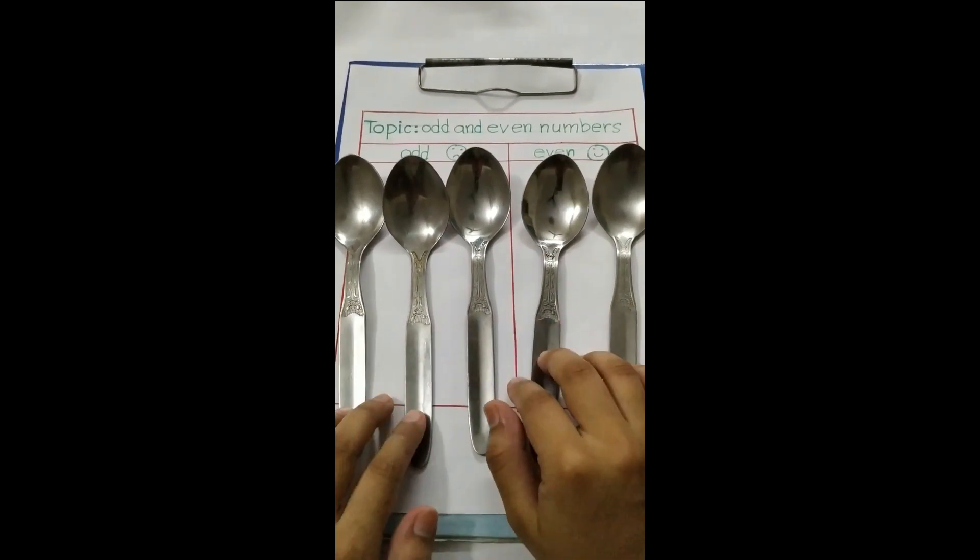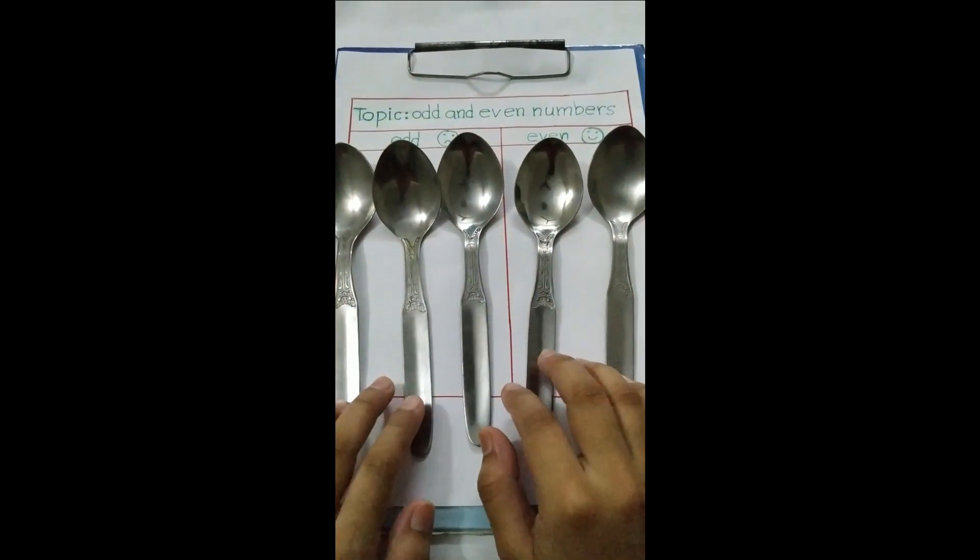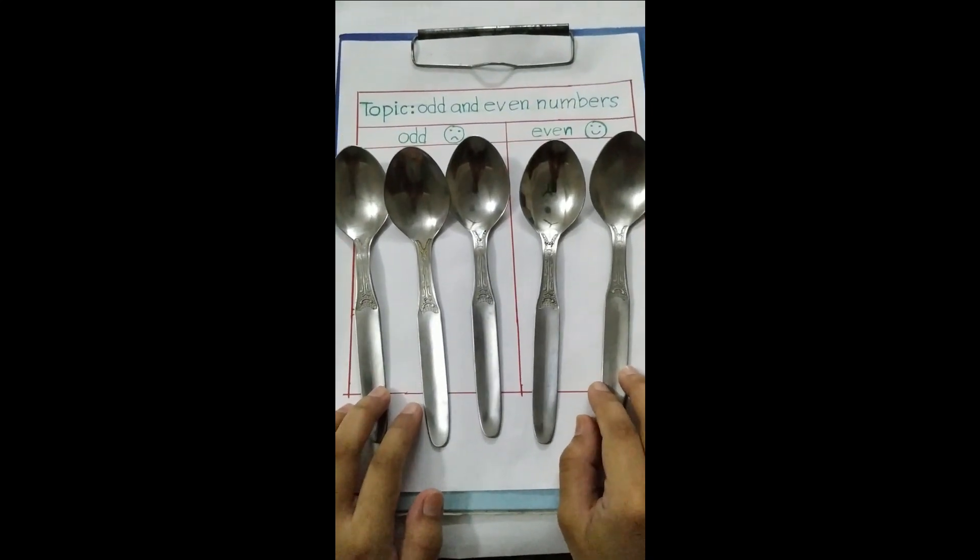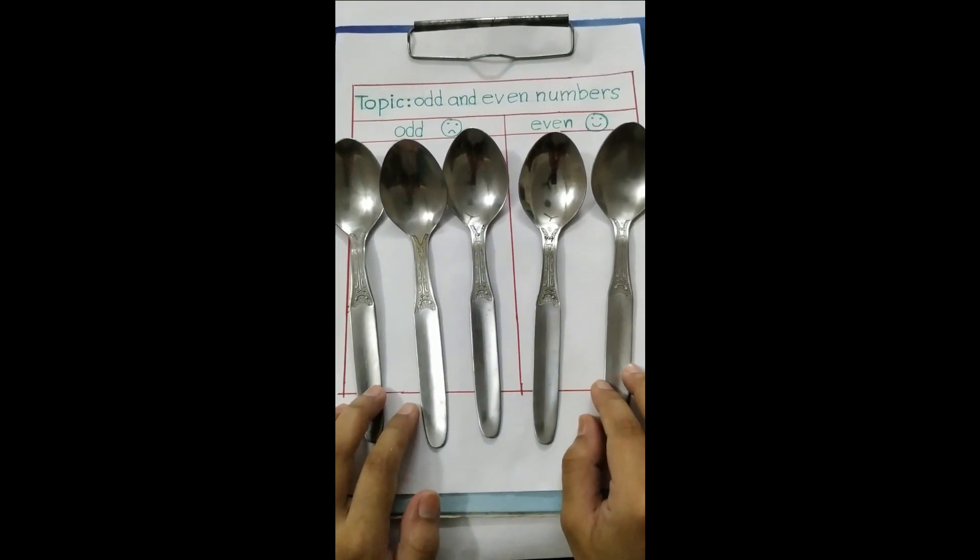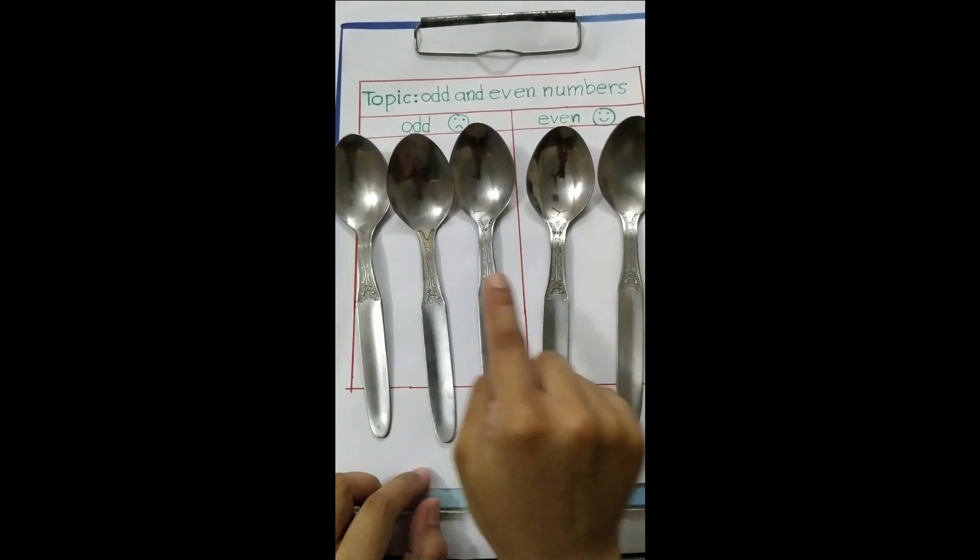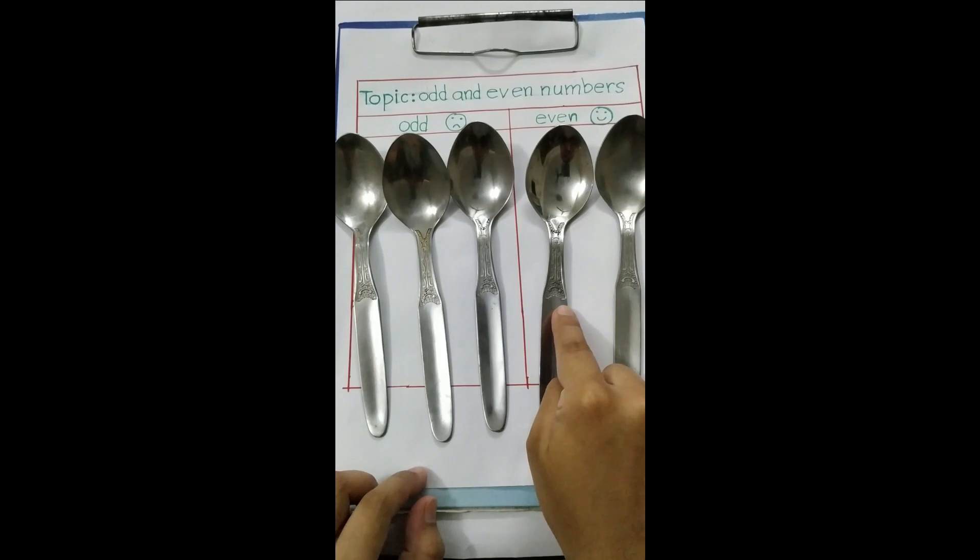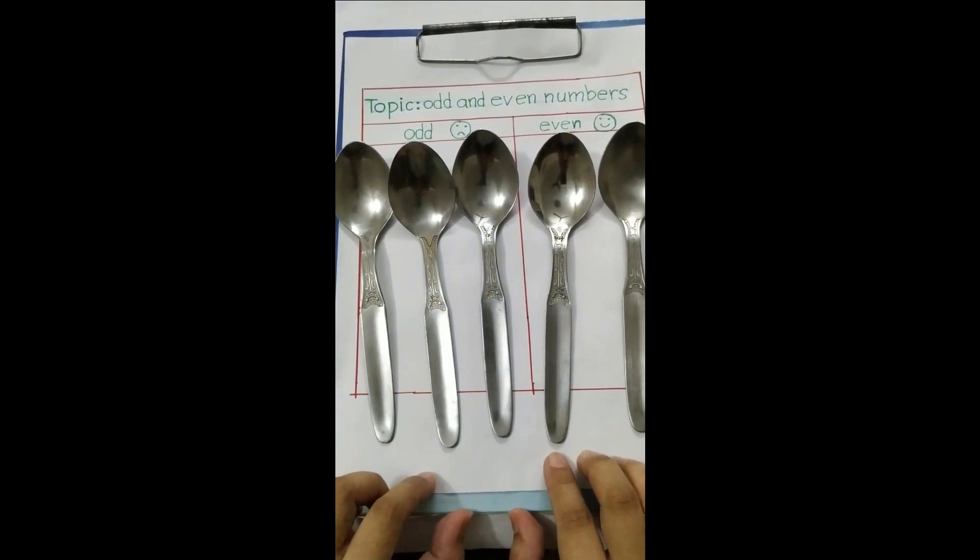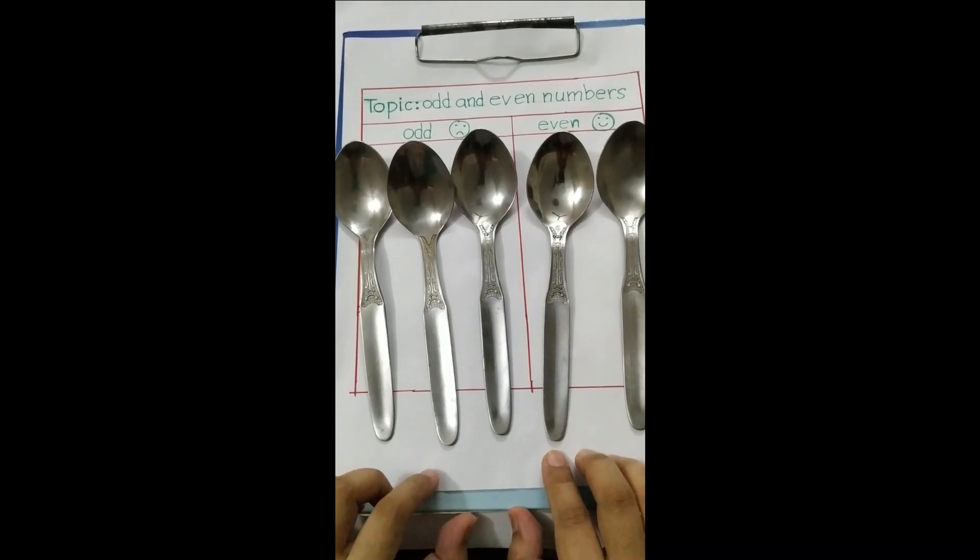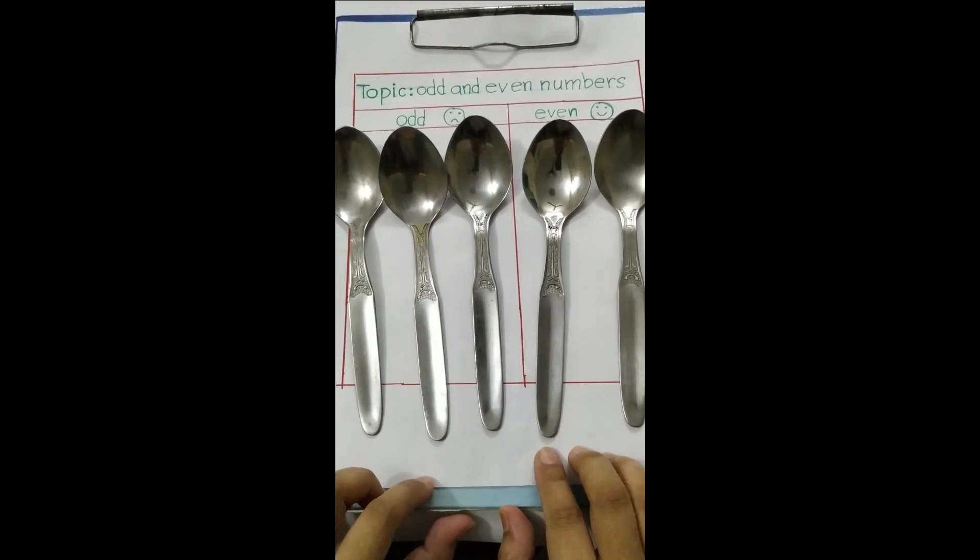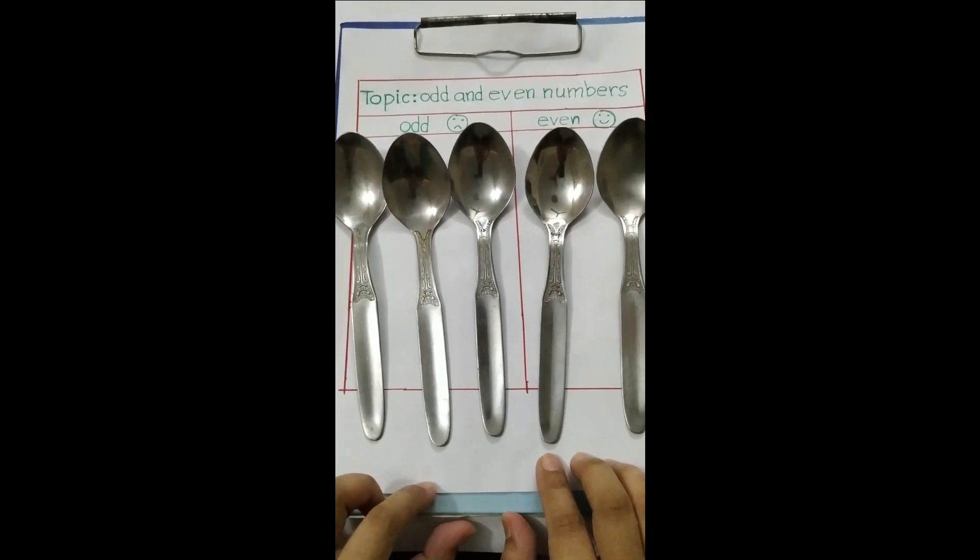Now you can see here a lot of spoons. So do you know how many spoons are here? Let me count: one, two, three, four, five. But do you know is it odd or even? You always remember one thing that even always comes in a pair.